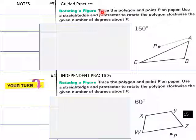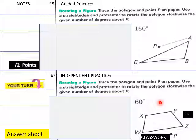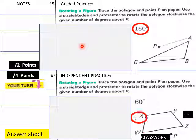Okay, into our guided practice here. Slide number 15. Trace the polygon and point P on a paper. So they want you to do that on a piece of paper. You can do that. But I want you to put your answers here, students, on this answer sheet. This is your answer sheet. Use a straight edge and protractor to rotate the polygon clockwise the number of given degrees about P. So here is our point P here, 150 degrees from point P. Two points up here because I'm going to show you how to do it. And then this is your independent practice down here, students.